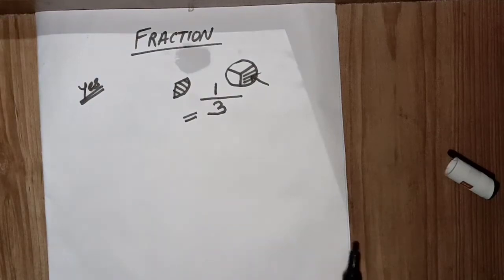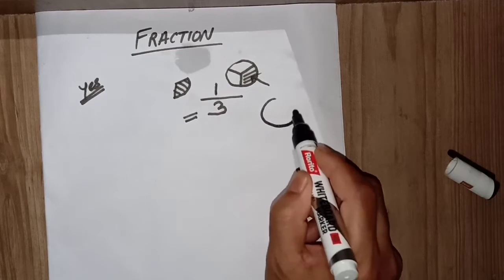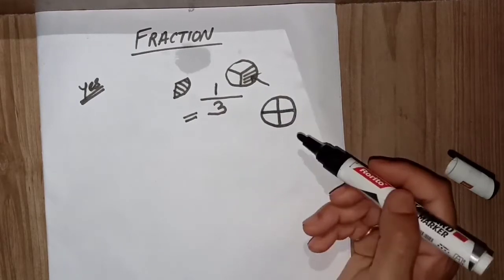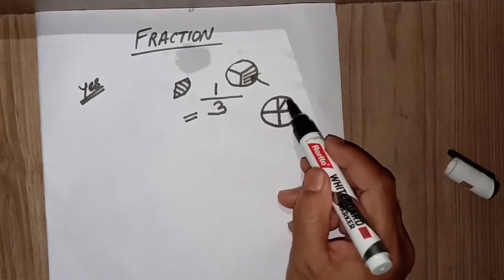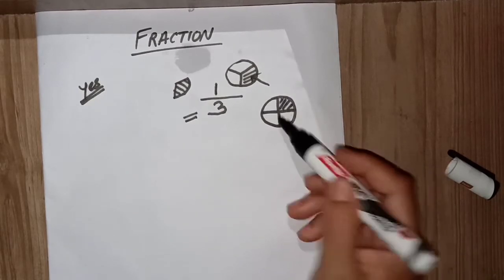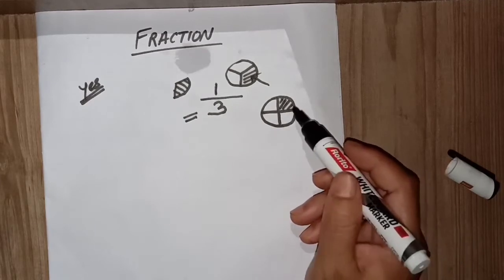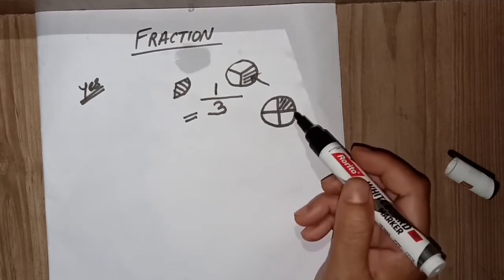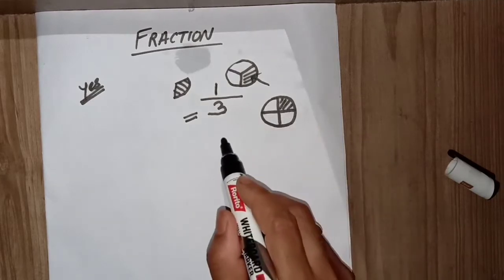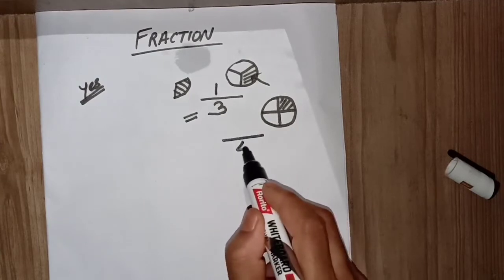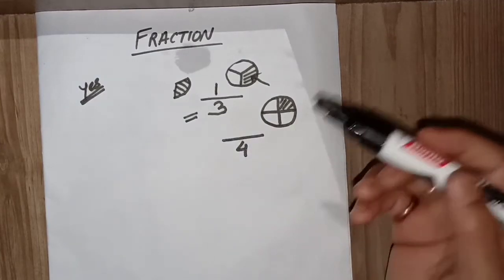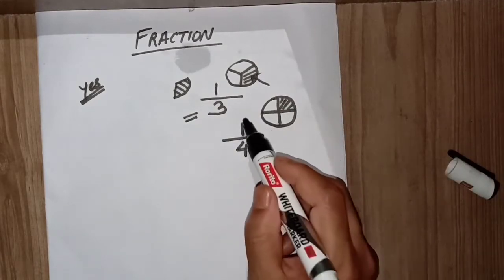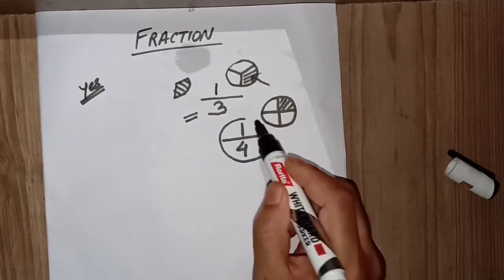Similarly, consider another circle. I have split this circle into four parts and considered only one part — the shaded part. This entire circle has been split into four parts, so the total number of parts is four. We are considering only one part, so one by four is the fraction representation of this particular part.